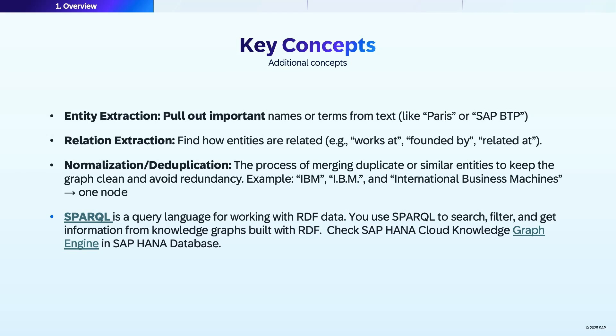Normalization or deduplication is the process of merging duplicate or similar entities to keep the graph clean and avoid redundancy. For example, IBM, I.B.M., and International Business Machines is one node. SPARQL is a query language for working with RDF data. You use SPARQL to search, filter, and get information from knowledge graphs built with RDF.